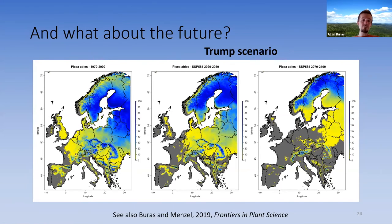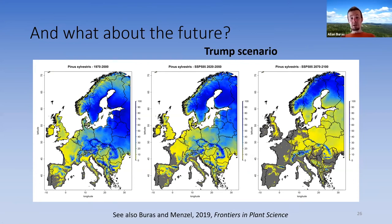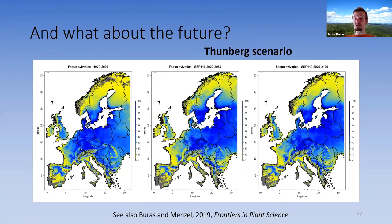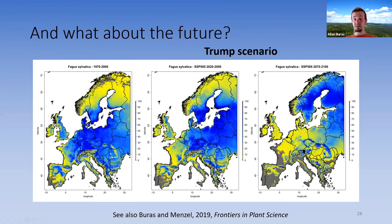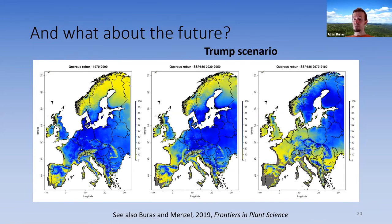Similar patterns apply to Scots pine — still present in Germany under mild climate change, but vanishing from all of Germany and Central Europe under the Trump scenario, constrained only to northern Europe. European beech, a key species in German forests, shows high projected abundances under the Thunberg scenario but likely disappears to high elevations under the Trump scenario. Oak also shows no problems under the Thunberg scenario but restriction to high elevations under the Trump scenario.